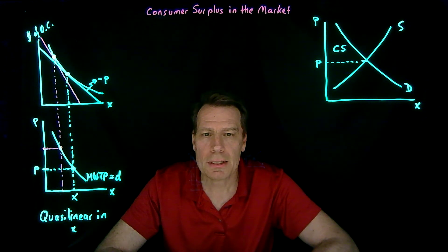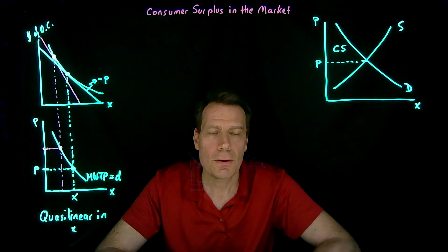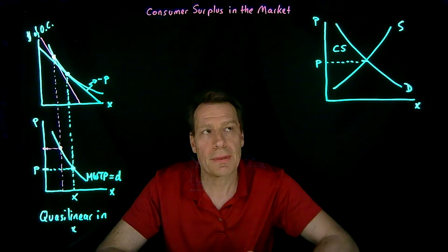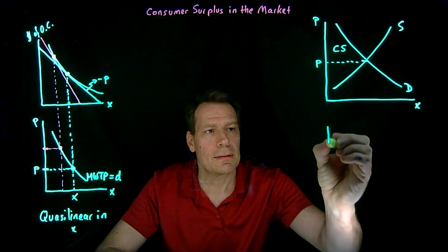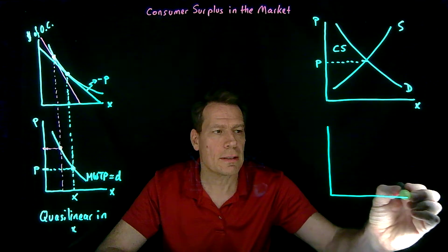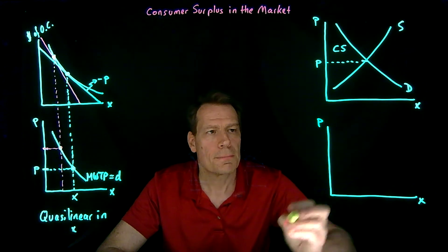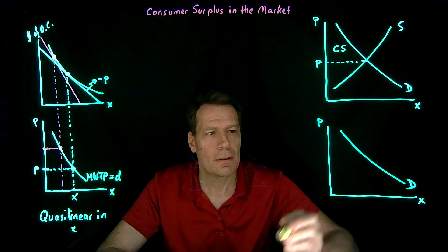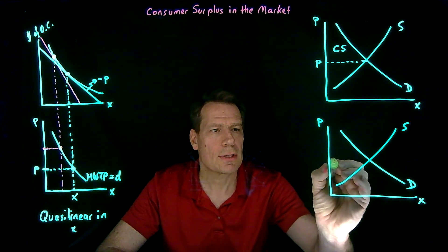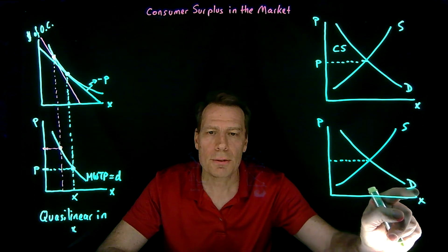In a previous economics class, you've probably drawn this picture, and what you implicitly assumed without saying it was that the underlying tastes are quasi-linear — that's what makes the picture correct. If the underlying tastes weren't quasi-linear, consumer surplus would look a little different. We'd still have an aggregate demand curve, a supply curve, and an equilibrium price, but the demand curve could no longer be interpreted as an aggregate marginal willingness to pay curve.